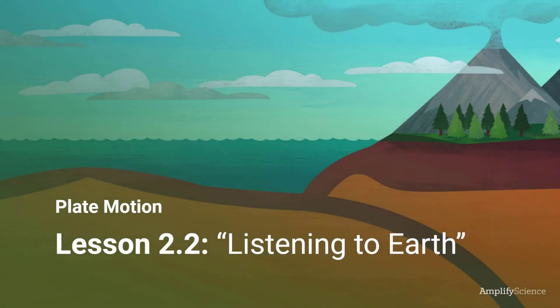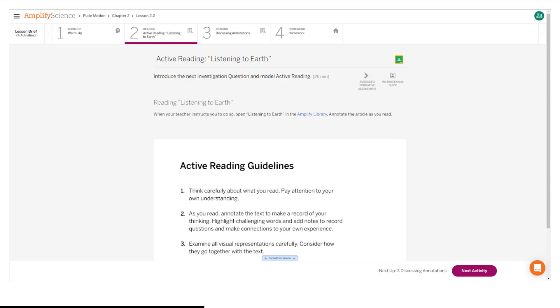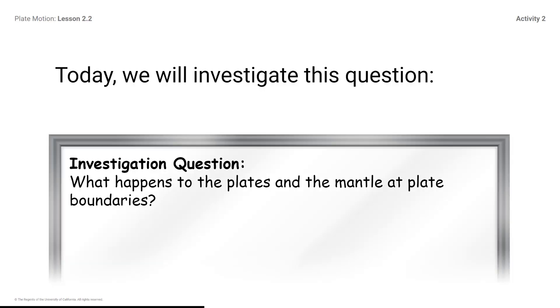Plate Motion Unit, Lesson 2.2: Listening to Earth. Activity 2: Active Reading, Listening to Earth. Here is what your student screen looks like for this part of the lesson. Today we will investigate this question: What happens to the plates and the mantle at plate boundaries?